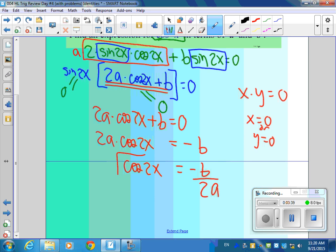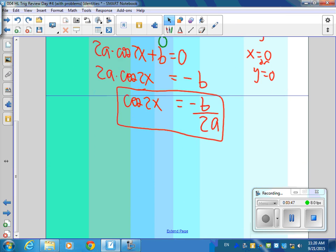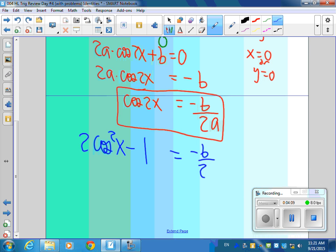Now I've got one more thing I need to do to get down to what they want, cosine squared x. Anybody see what I should do next? Perfect. Cosine squared x minus sine squared x. And if you change the sine squared, you'll get 2 cosine squared x minus 1 is equal to negative b over 2a.